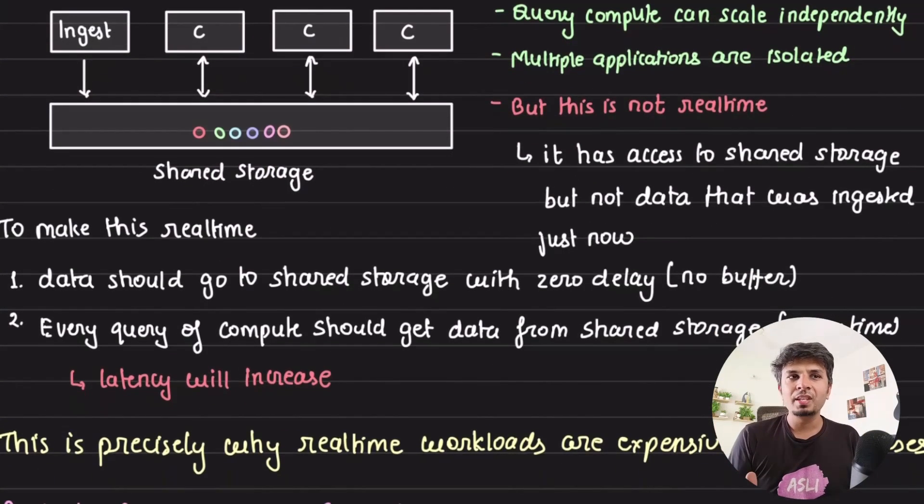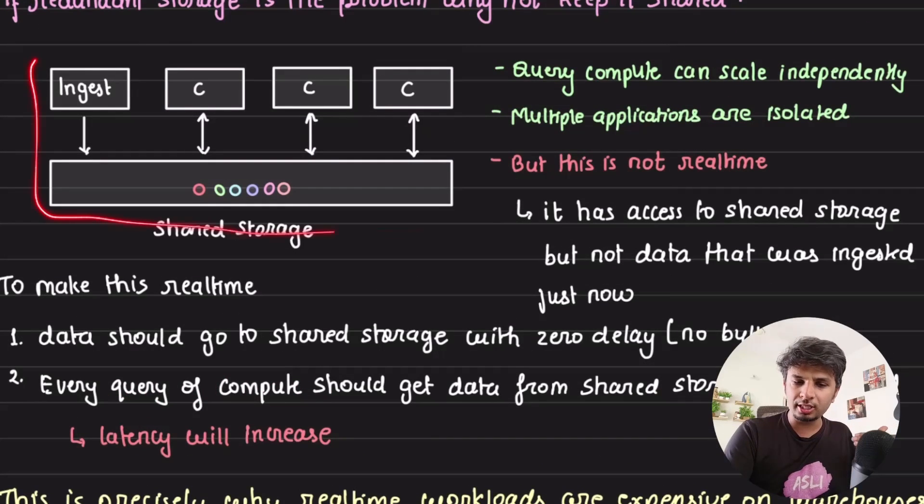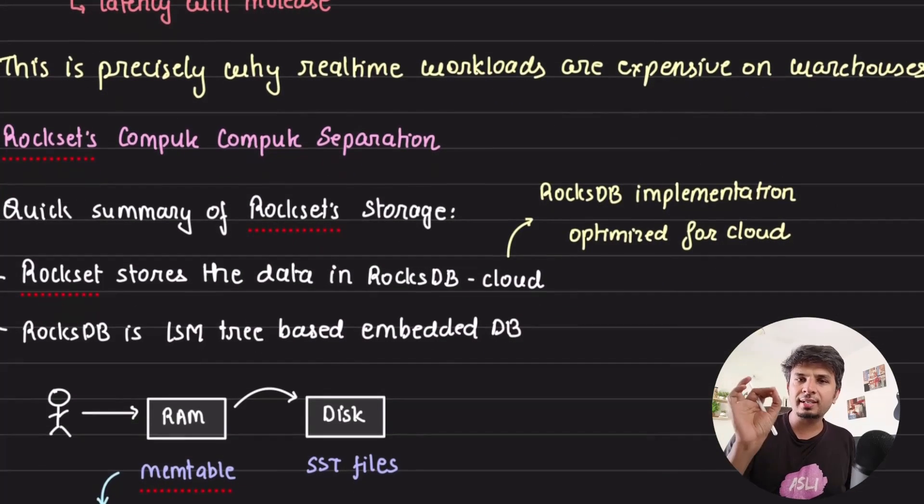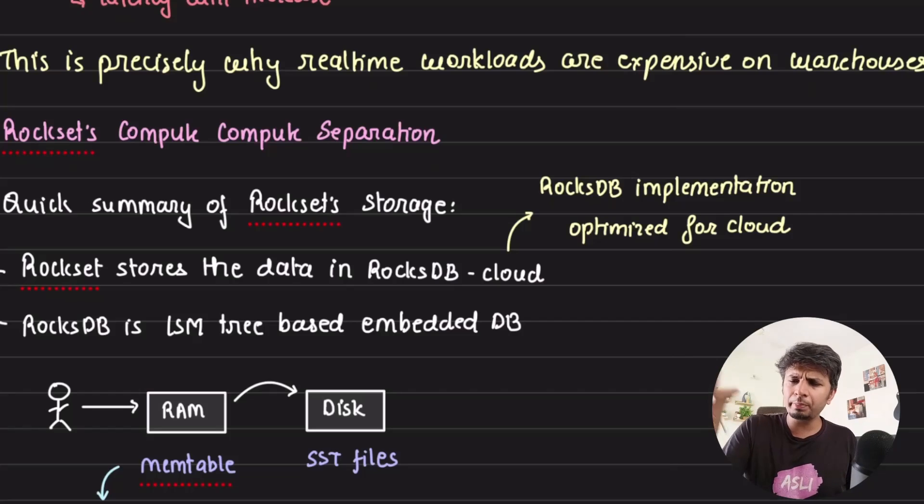So what do we do? This is where Rockset's approach of compute, compute separation comes in. They are very close to this approach because this approach is the closest when it comes to having isolation of compute, which is the key requirement for a real time analytics database. You have a shared storage so that you don't need to duplicate the data, which means your system is truly horizontally scalable. The only problem with this approach was that your data was not real time. How do they solve it? Now this is where Rockset's compute, compute separation comes in. Before we jump into that, just one prerequisite for this is how Rockset works.